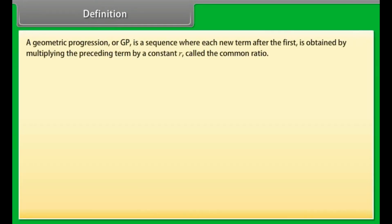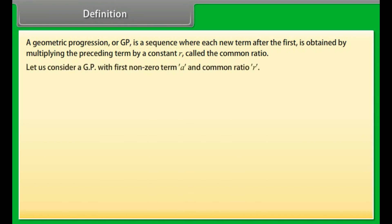A geometric progression or GP is a sequence where each new term after the first is obtained by multiplying the preceding term by a constant R, called the common ratio. Let us consider a GP with first non-zero term A and common ratio R. A1 = A, A2 = A × R, A3 = A × R², A4 = A × R³, and so on.